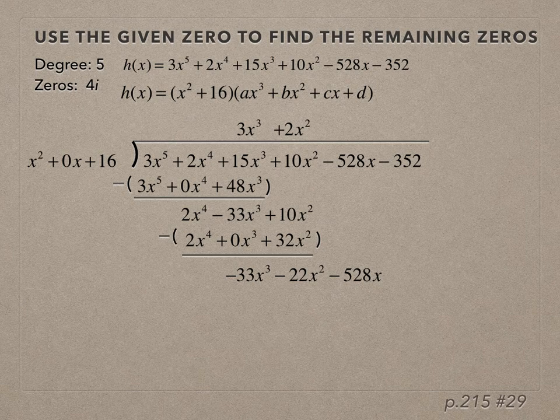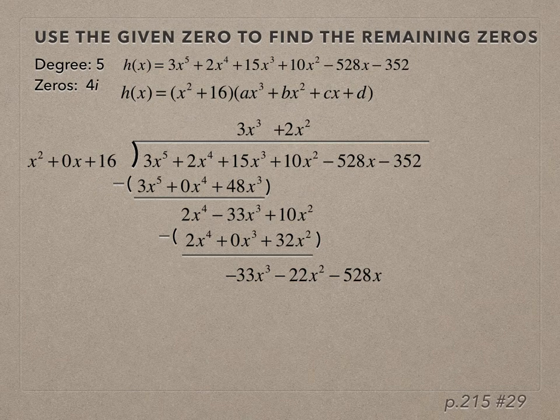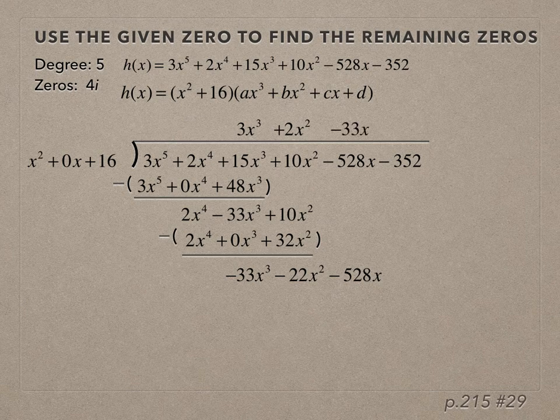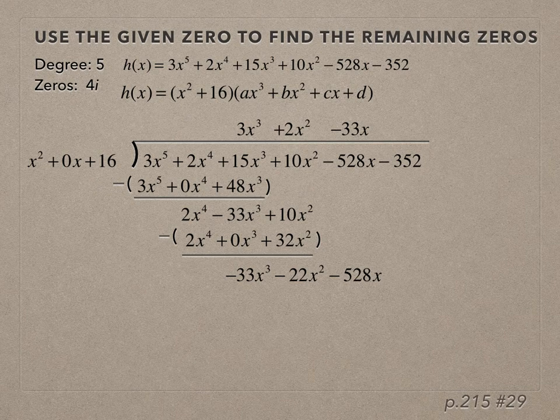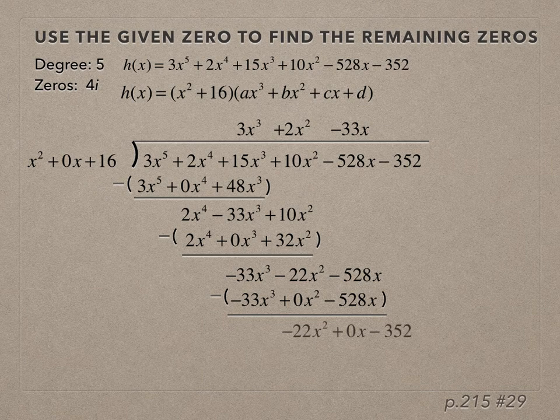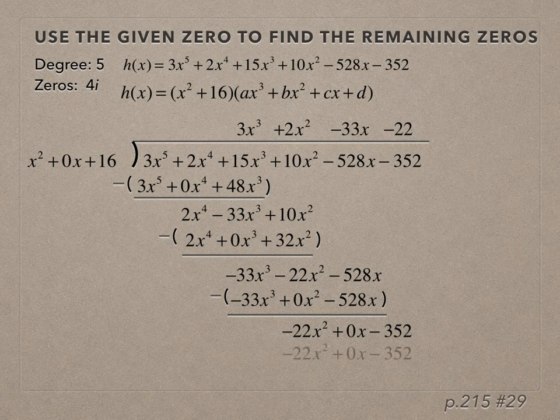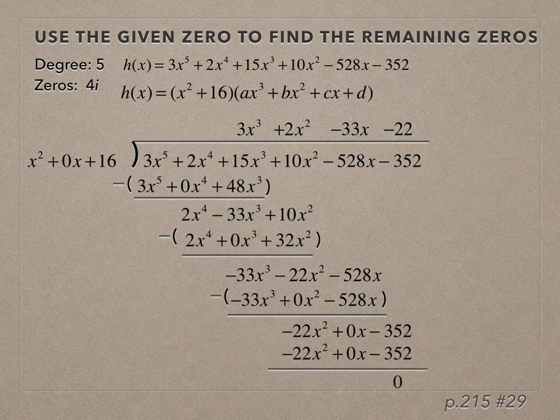Same question: x² times what is -33x³? That would be -33x. Multiply -33x by the divisor, subtract, and bring down. Final step: x² times what is -22x²? That's -22. Multiply -22 by each term in the divisor, subtract, and our remainder is 0.